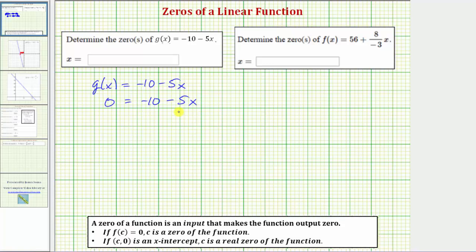So the first step to solve this linear equation is to isolate the variable term by adding or subtracting. So let's undo this negative ten by adding ten to both sides of the equation. On the left side we have zero plus ten, which is ten. Negative ten plus ten is zero,